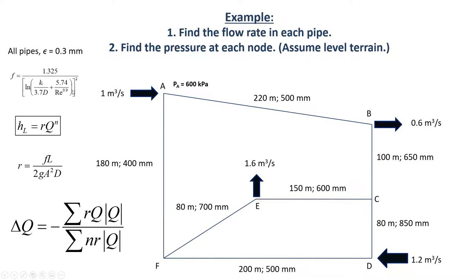But the first step is really to come up with the guess flow rates. You can see in this example that there's one cubic meter per second coming in at A. What that means is you have to decide where to send that one cubic meter per second — some of it will go down towards junction F, some towards junction B. There's really no wrong answer when you do that first guess.